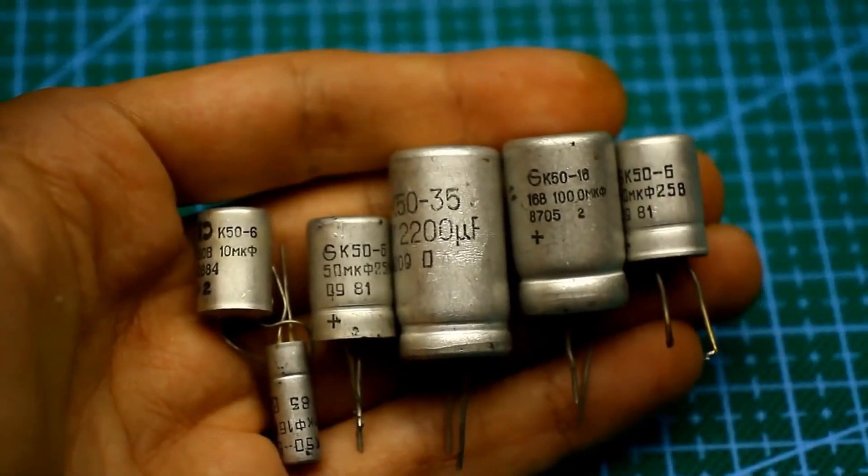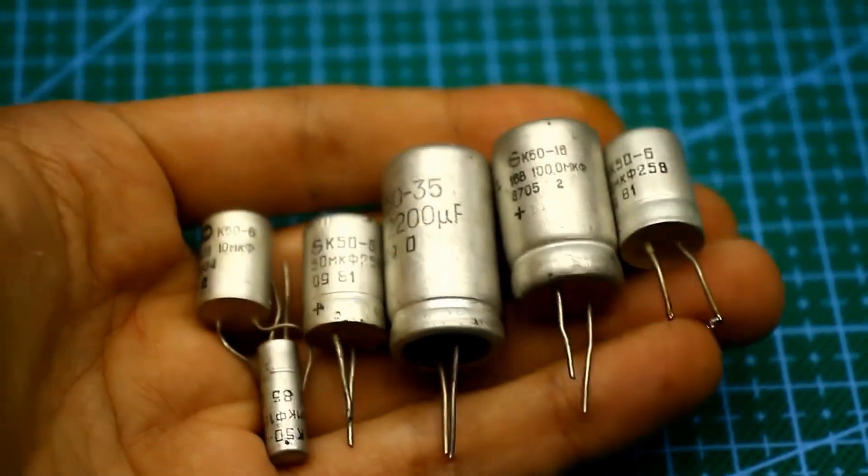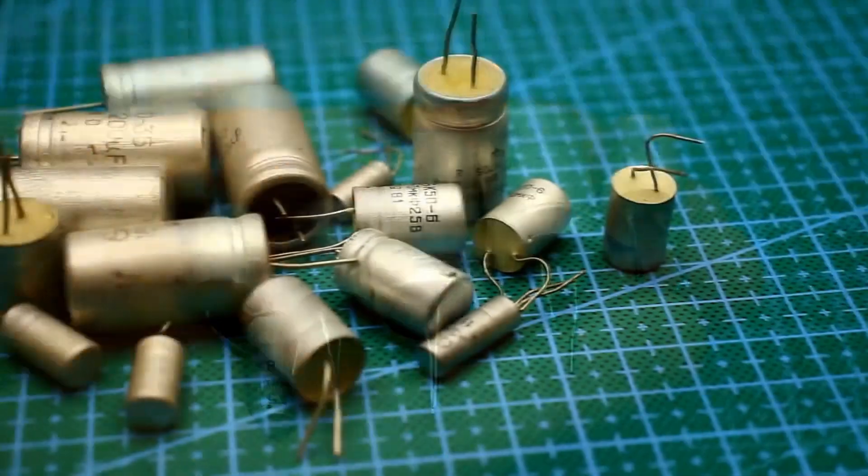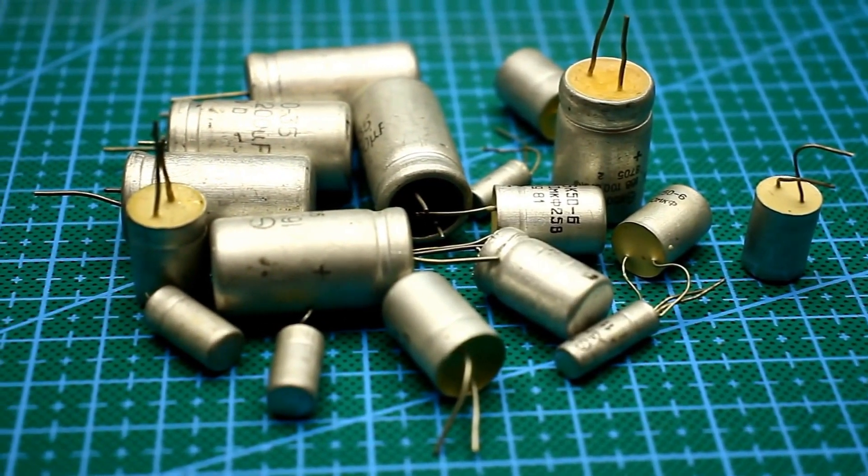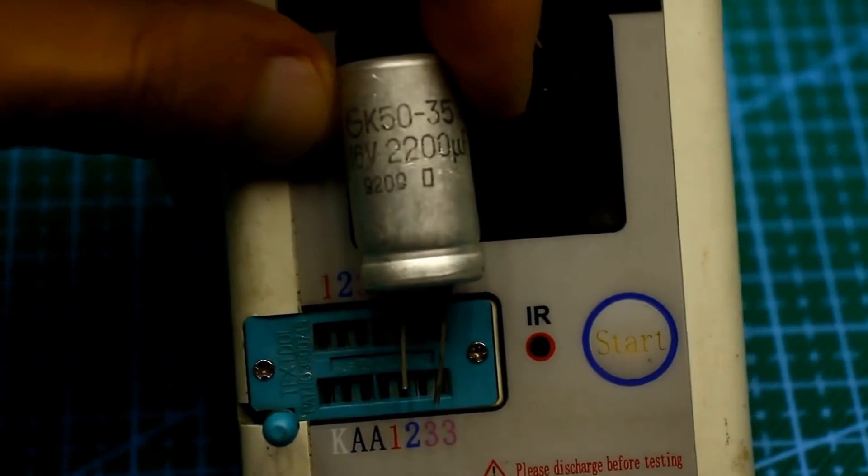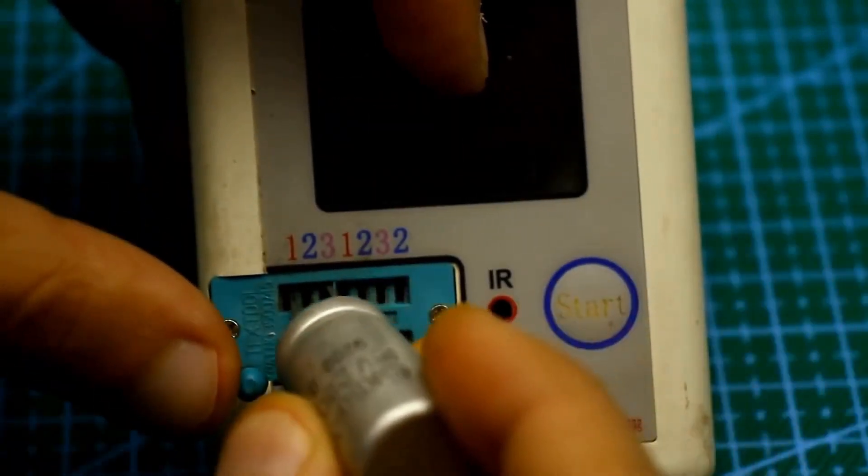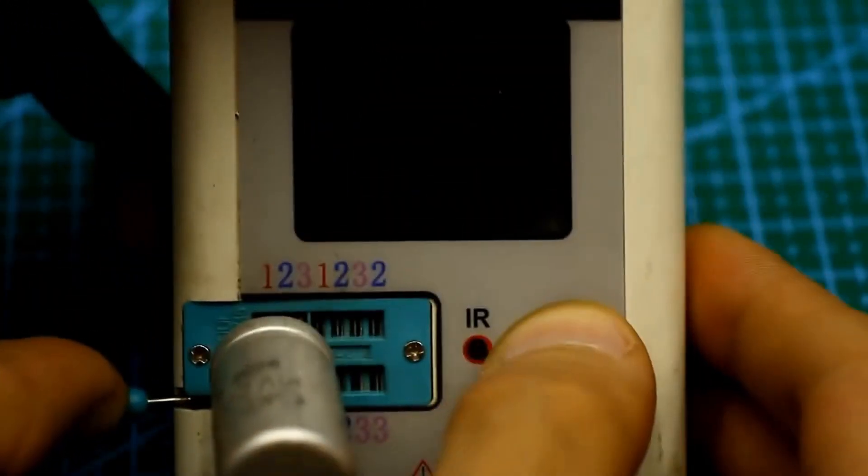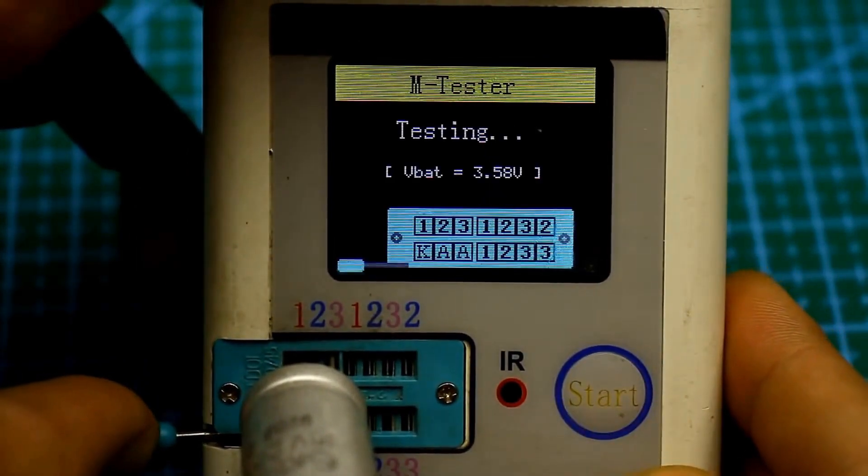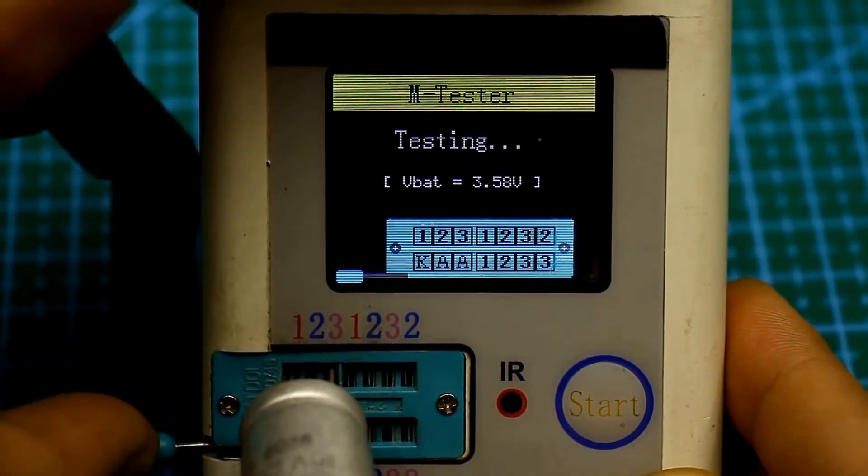In general, about capacitors, especially electrolytics, I strongly recommend checking their capacitance, leakage, and internal resistance before using them in a circuit. The capacitance should be close to the stated value. Leakage should be as minimal as possible. And the lower the internal resistance, the better.